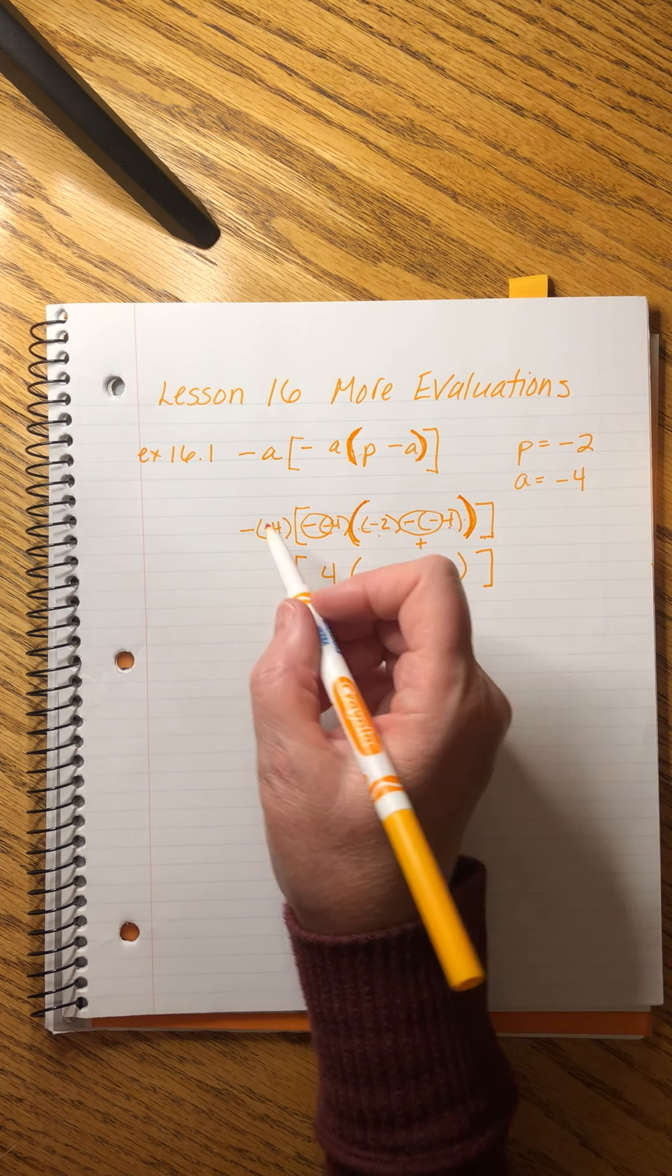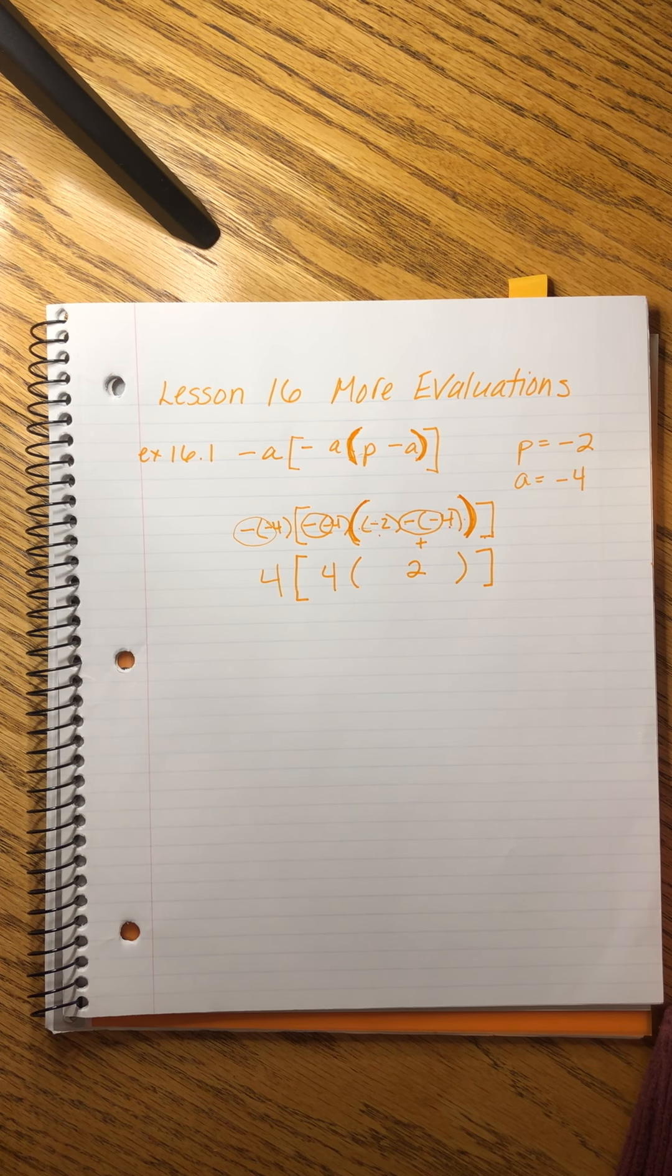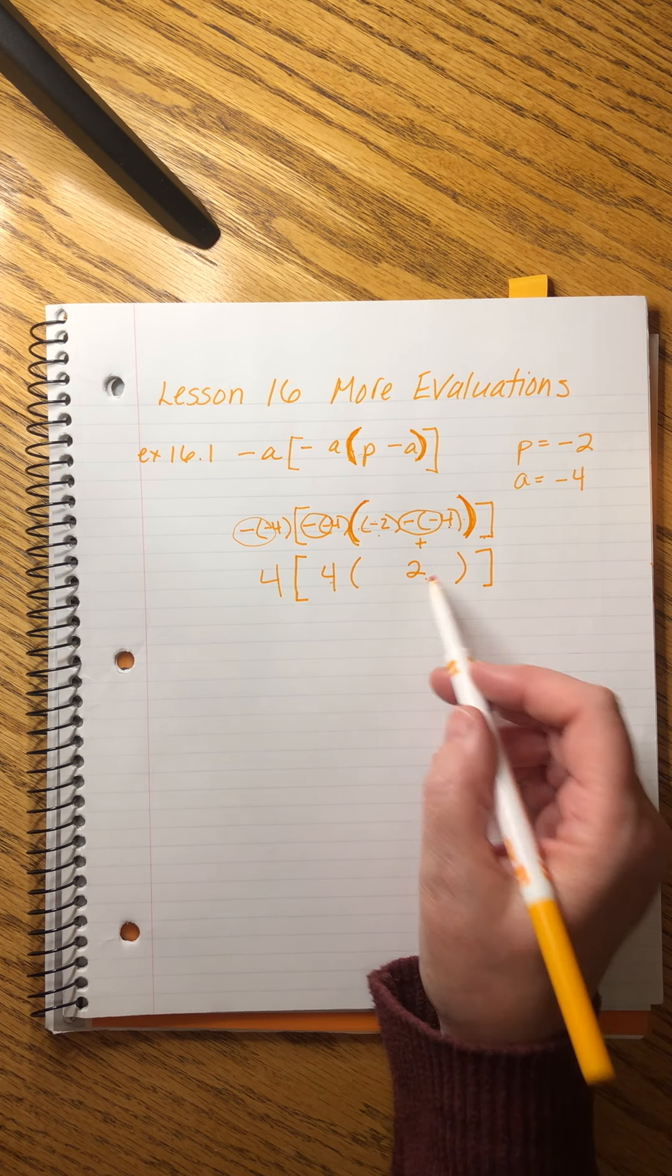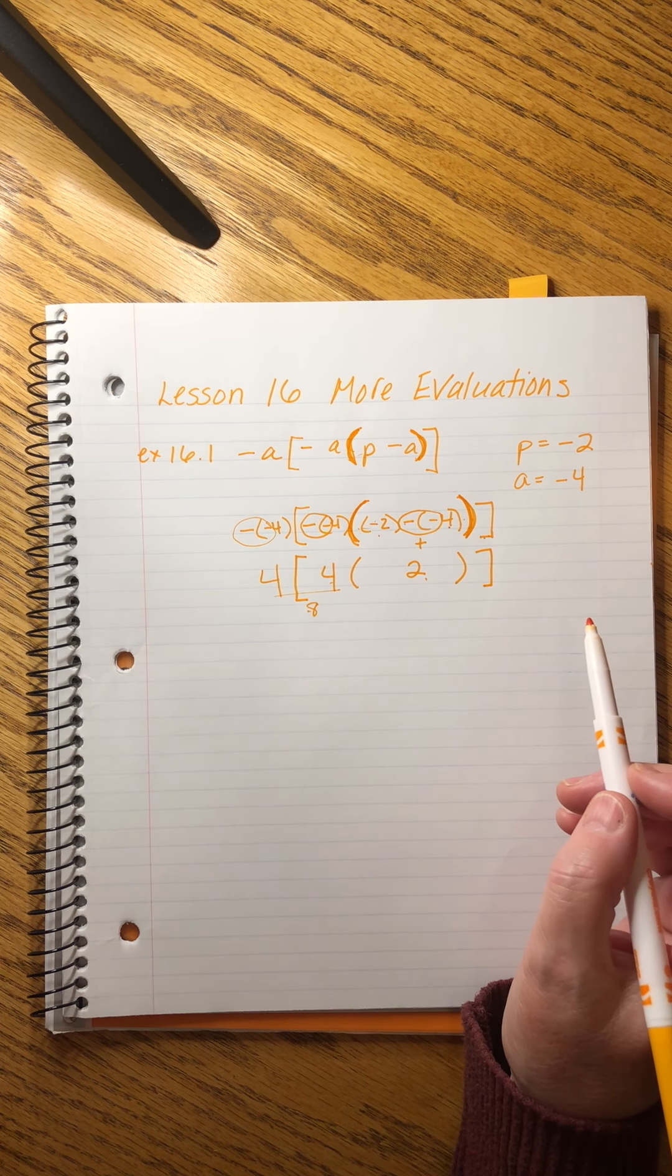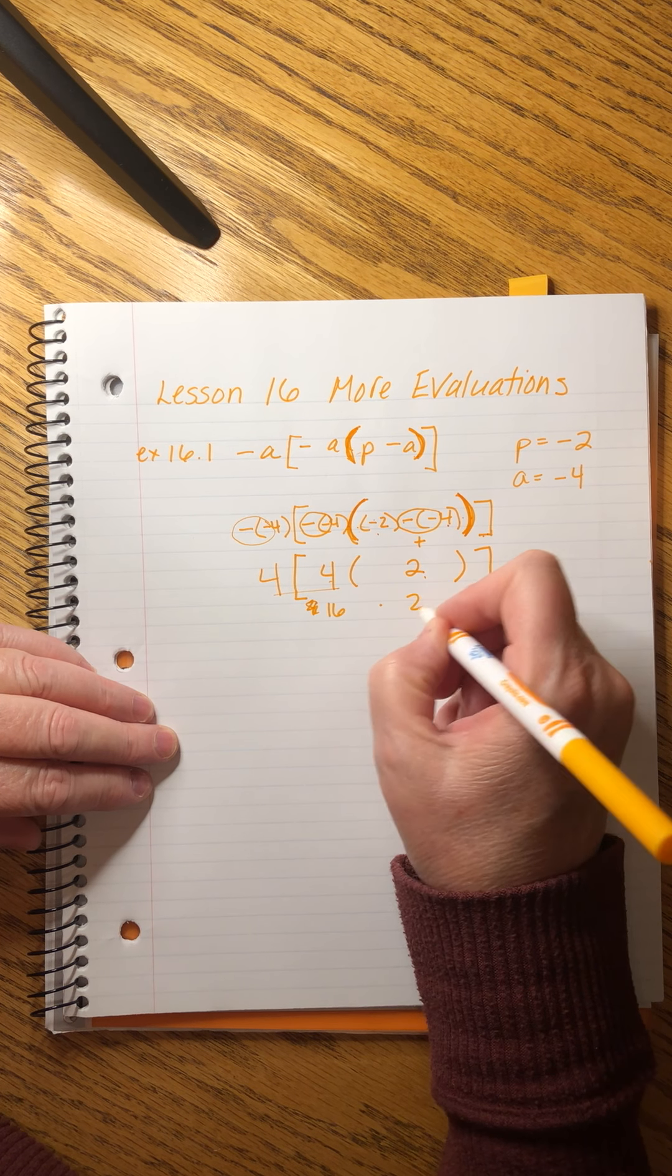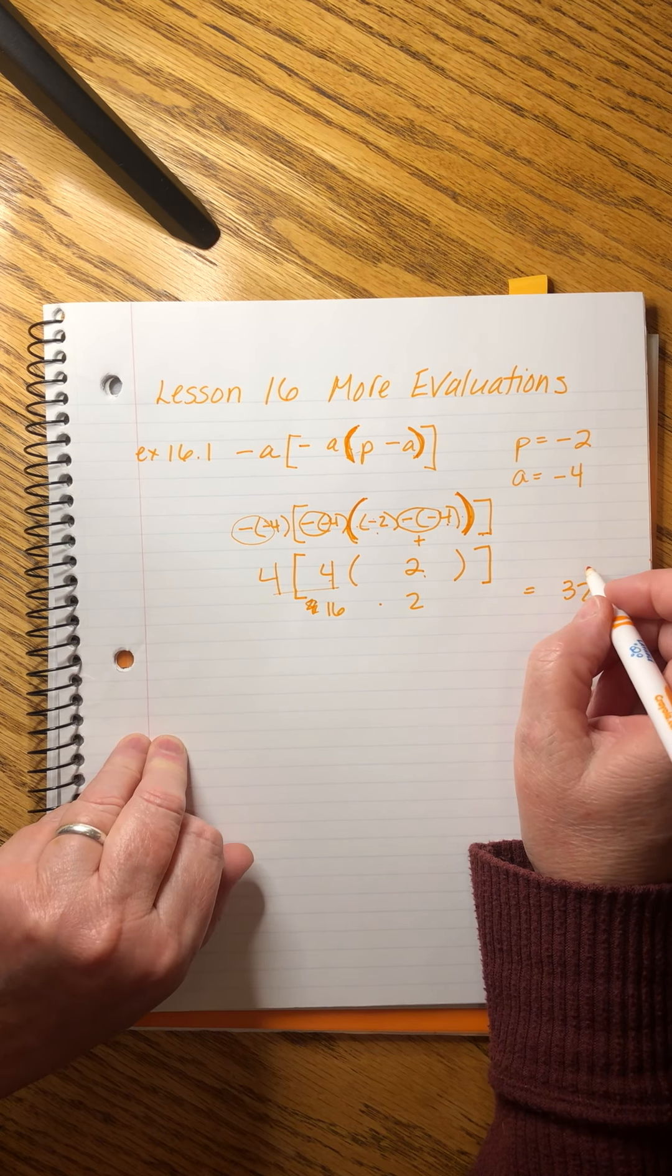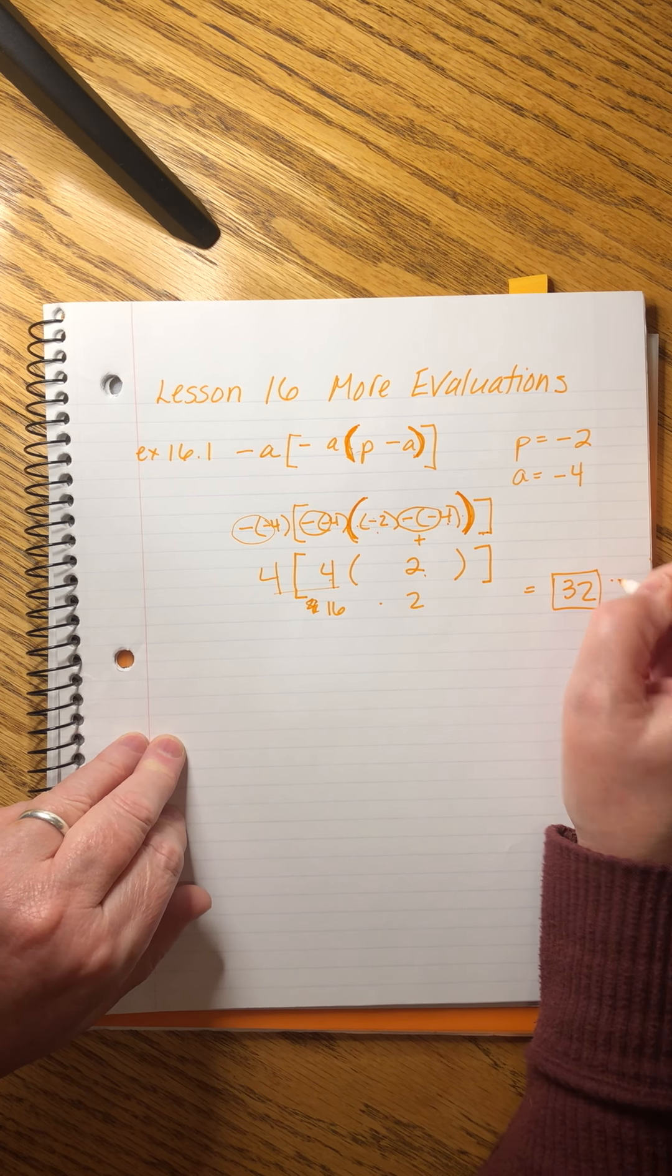That becomes positive four. And I'm going to write the whole problem again. I'm going to simplify that as well. But suddenly I'm feeling a whole lot better about this problem, aren't you? Because it's just four times four times two. That much is eight. Eight times. No, that's 16. 16 times two equals 32. Yeah, that's the right answer. Sorry. My brain went sideways for just a second.